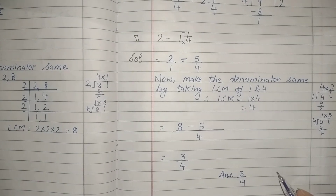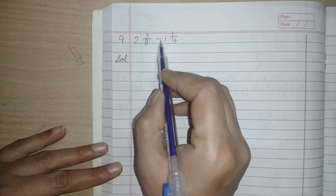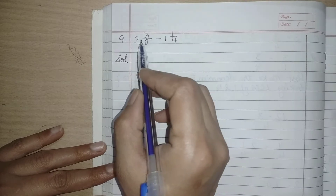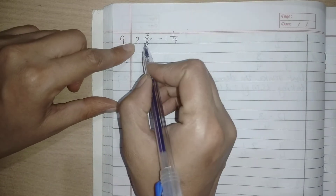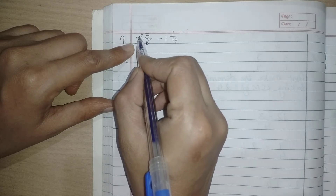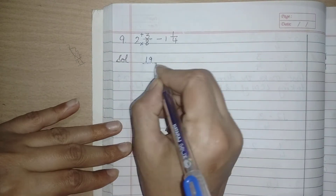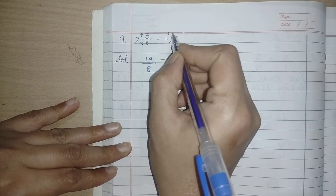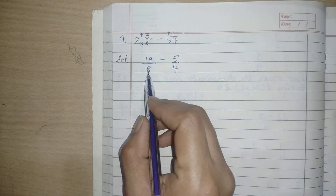I hope it is clear. Now let us move to the next part. Here we have the question: 2 whole 3 by 8 minus 1 whole 1 by 4. So here it is mixed fraction. Jab bhi mixed fraction mein hota hai, hum us ko improper mein convert karenge. Denominator ko whole number se multiply karo: 8 twos are 16, aur numerator mein add karo — 16 plus 3 it is 19 upon 8. Minus. Same we will do with the next fraction: 4 ones are 4, aur numerator add karein — 4 plus 1, this is 5 upon 4.